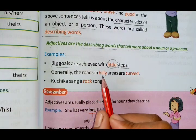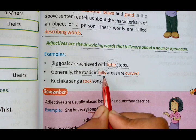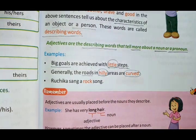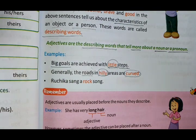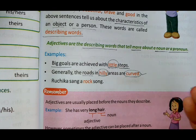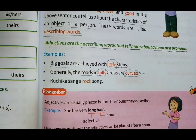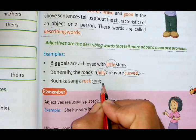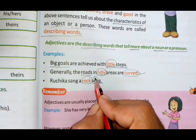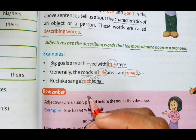Another example: 'Ruchi sang a rock song.' Ruchi sang a song, but what kind? A rock song. We could also say sad song, patriotic song, classical, semi-classical, light music — these are all describing words for the song. These are the adjectives. So remember, adjectives describe what kind of thing we are talking about.